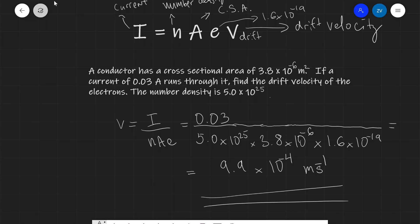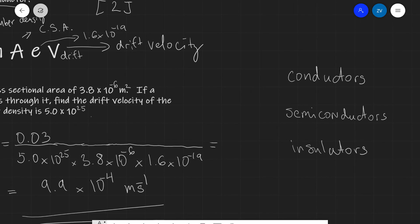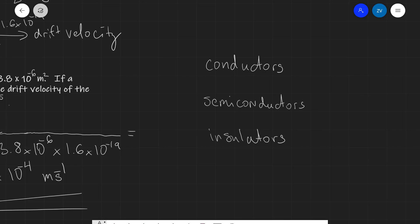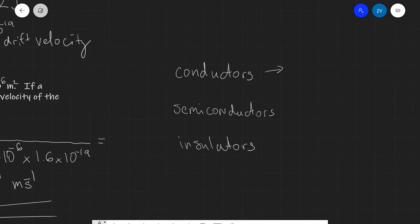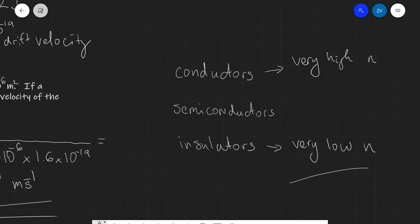This is actually a typical speed — the electrons themselves move very slowly, yet electricity seems to propagate almost instantaneously. Number density is used to compare the conductive properties of different materials. Conductors have a very high number density, meaning many free charges per unit volume. Insulators have a very low number density with very few free charges per unit volume. Semiconductors have an intermediate number density, falling in between conductors and insulators.